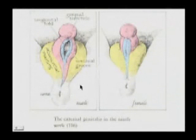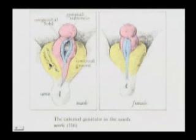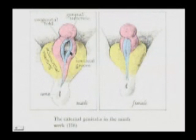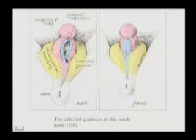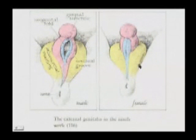We are viewing an inferior view of male external genitalia on the left and female on the right at the ninth week. Yellow represents the labioscrotal swellings, blue represents the urogenital folds, and red represents the genital tubercle. The space between the two urogenital folds is the urethral groove — in the male this will fuse in the midline. The structures are relatively undifferentiated at this stage and quite equivalent between sexes.